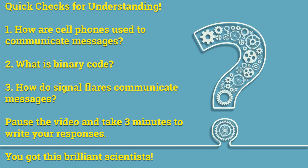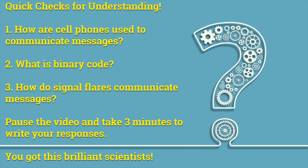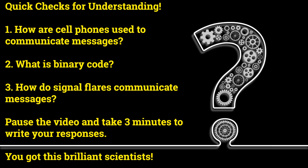Quick checks for understanding. Number one, how are cell phones used to communicate messages? Number two, what is binary code? Number three, how do signal flares communicate messages? Pause the video and take three minutes to write your answers. You got this, brilliant scientists.